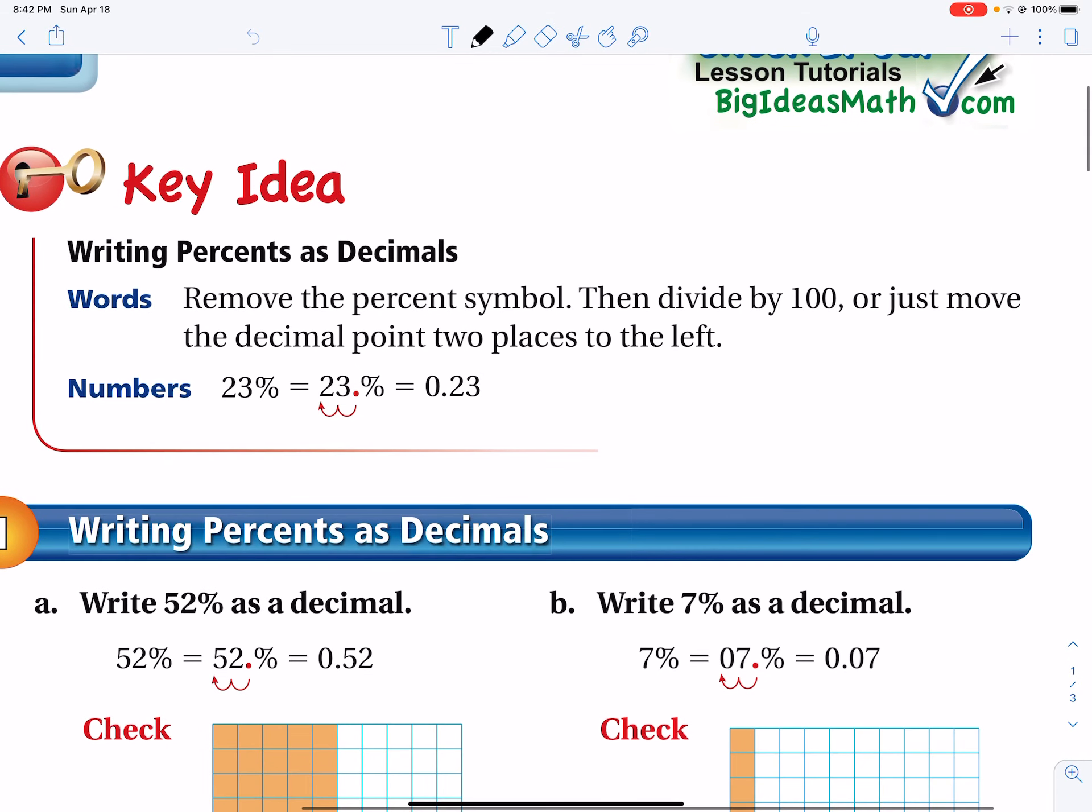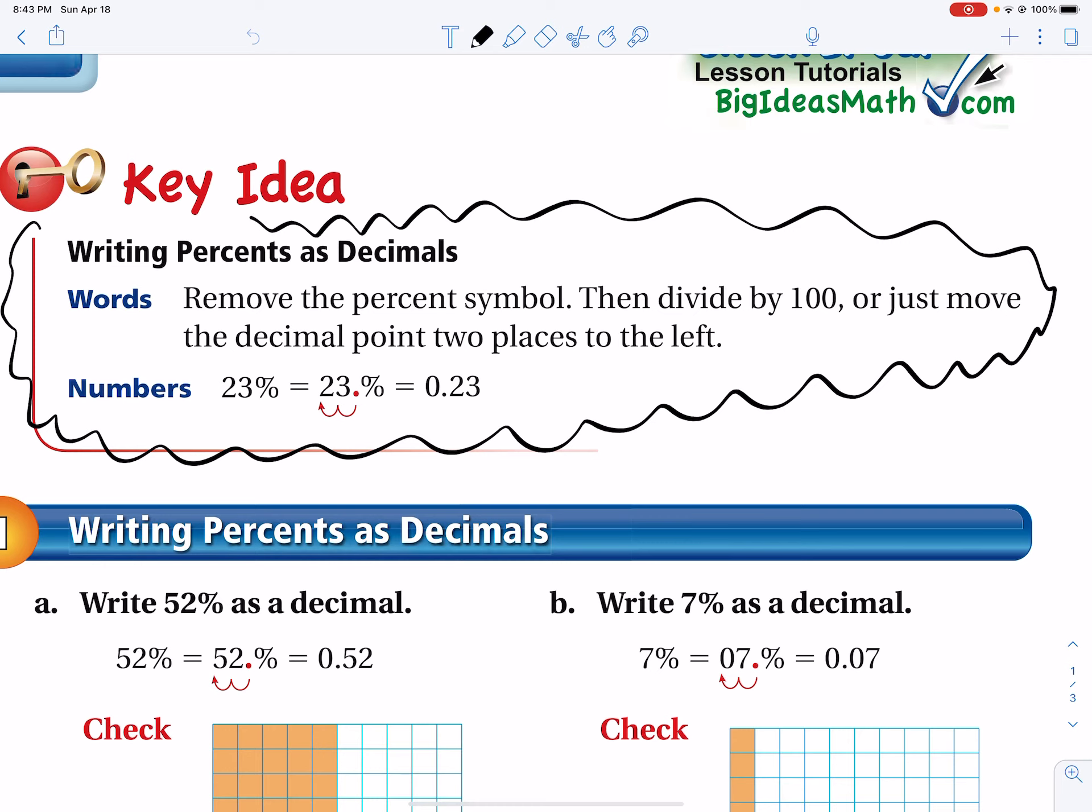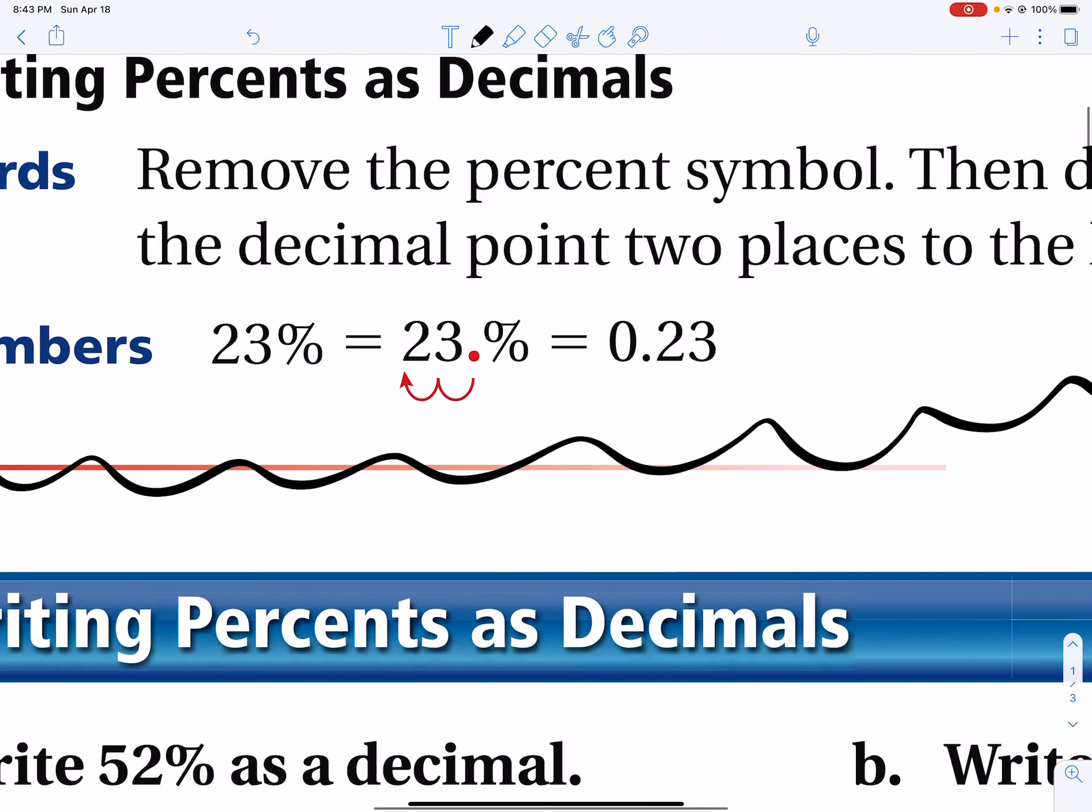So taking a look at our textbook and reading what we see, the key idea is to write a percent as a decimal. You want to remove the percent symbol and then you can either divide that number by 100 or just move the decimal point two places to the left. So here's a great example. Here's 23 percent.